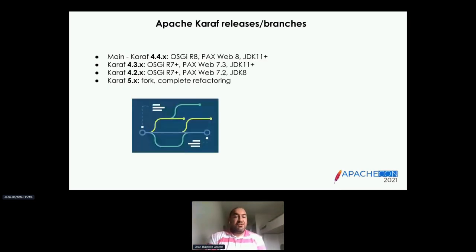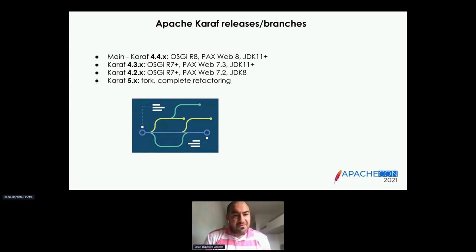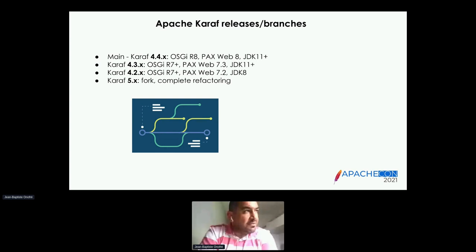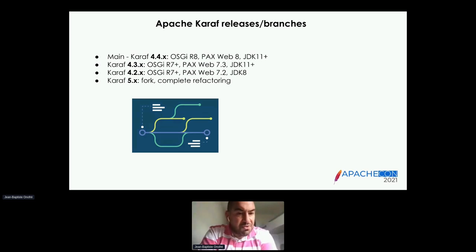In terms of releases and branches, the main Karaf branch today is 4.3.x. We are working hard on Karaf 4.4.x to update to main. The main difference is that Karaf 4.4 is pure OSGi R8. We're going to upgrade to PAX Web 8, and the latest stable version released is 4.3.3, which is OSGi R7 compliant and uses PAX Web 7.3 with JDK 11+.